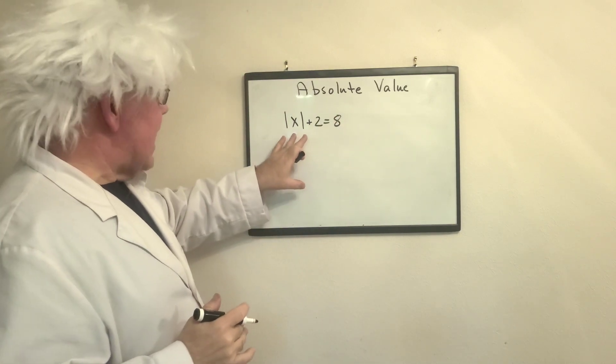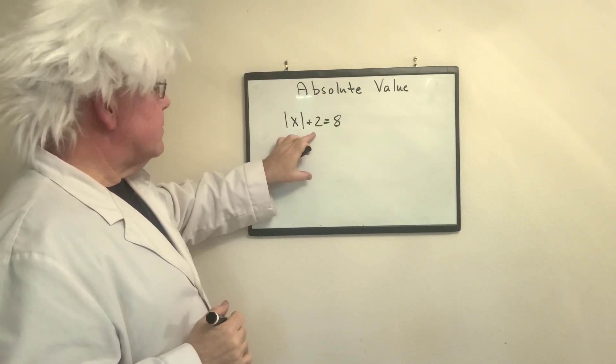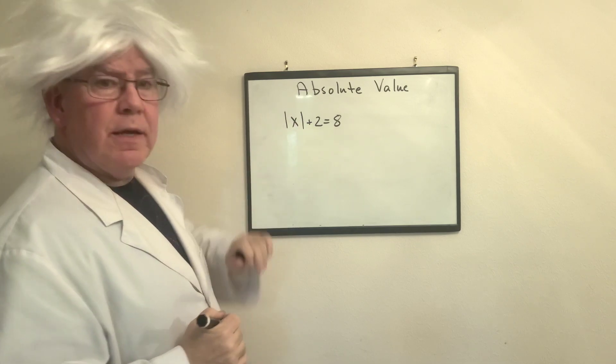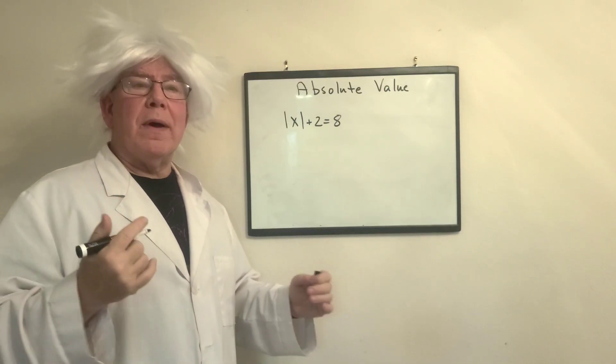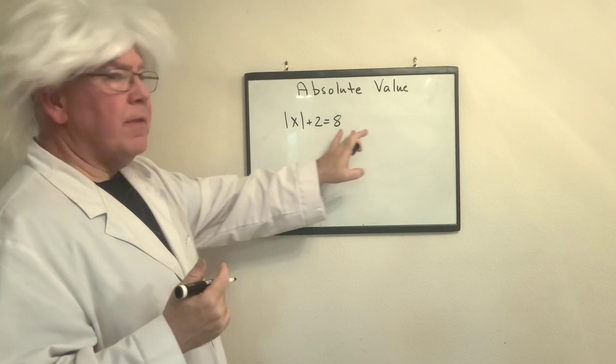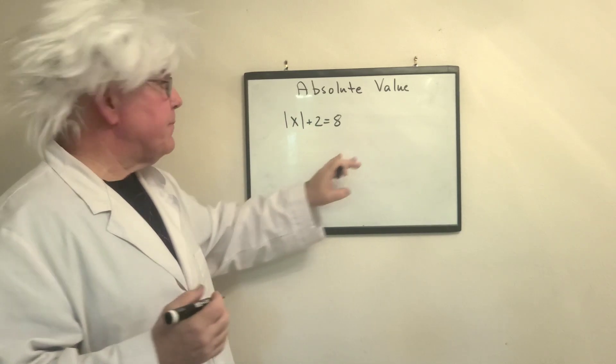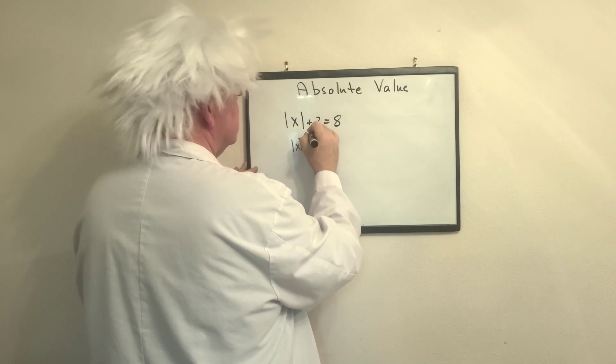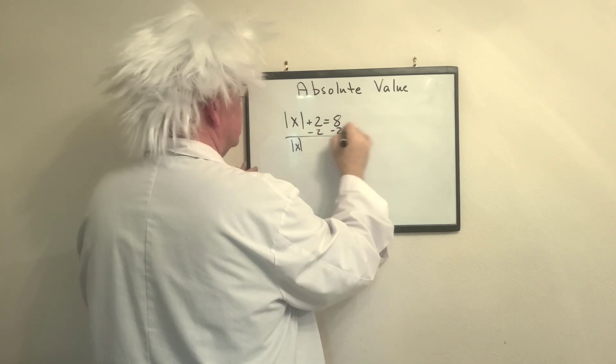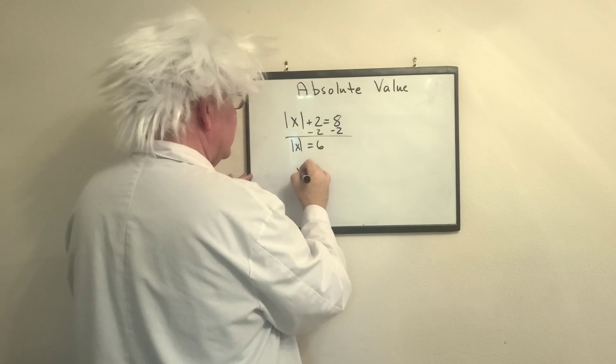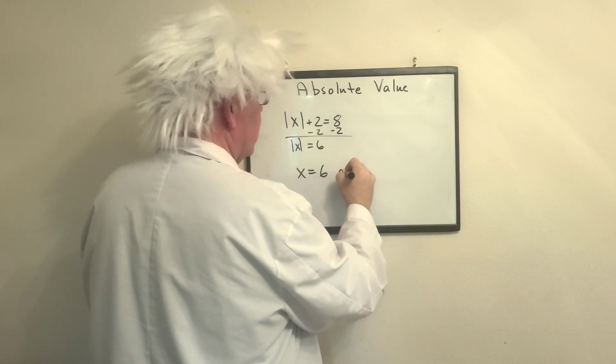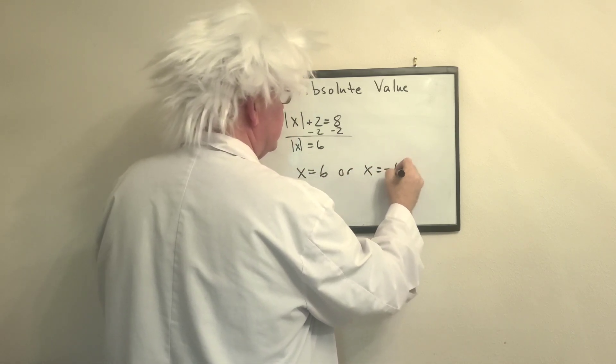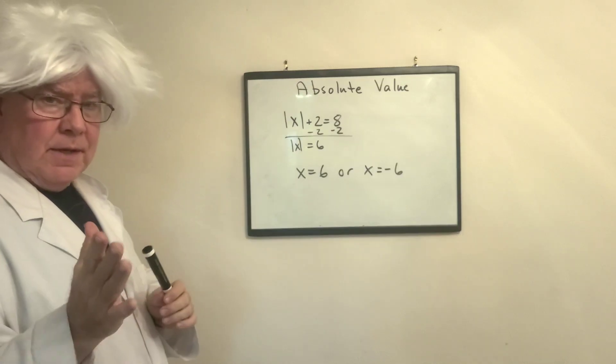So the absolute value of x plus 1 equals 6. First things first, we're going to move this on the other side first. So we're going to say absolute value of x equals 6. So x equals 6 or x equals negative 6. Got it?